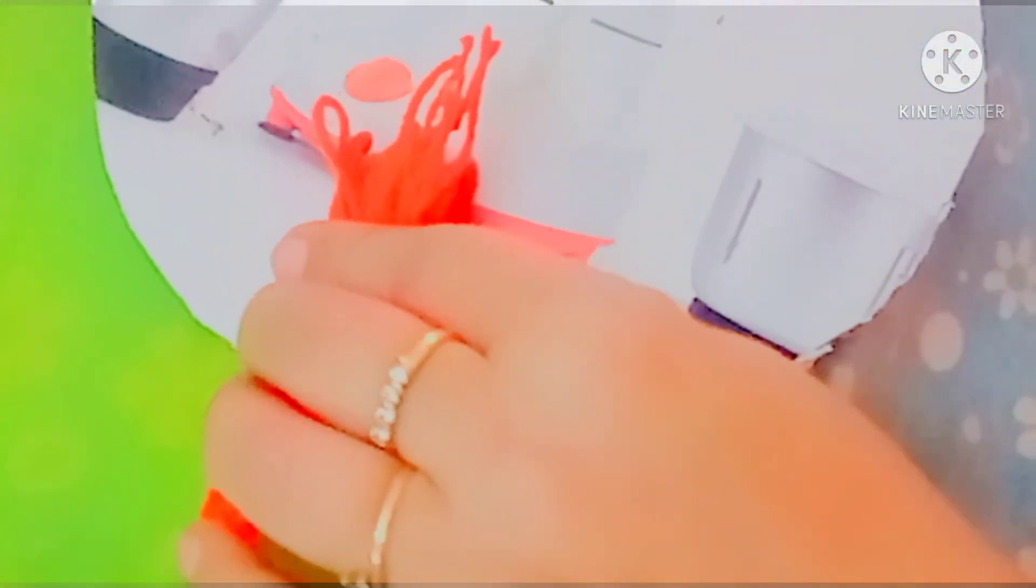I am going to make a tie. Now you just take this tassel and you have to stick it here at the end like this. With the help of the tape, we are going to stick this one. And here also we are going to stick this one.